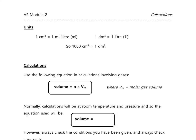A reminder of some units: 1 cm³ equals 1 mL, and 1 dm³ equals 1 L, so there are 1000 cm³ in a dm³. These units are often used in gas calculations.